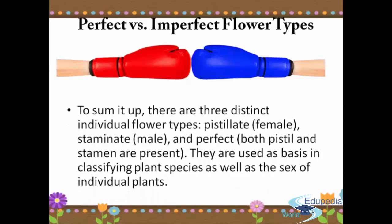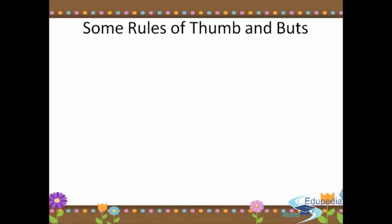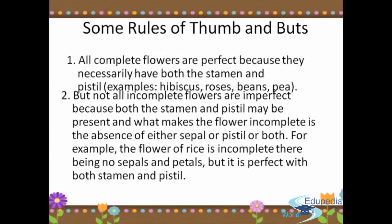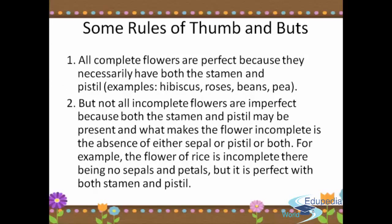To sum it up, there are three distinct individual flower types: pistillate for female, staminate for male, and perfect where both pistil and stamen are present. They are used in classifying plant species as well as the sex of individual plants. Some rules of thumb: all complete flowers are perfect because they necessarily have both the stamen and pistil — for example, hibiscus, roses, beans, and wheat. But not all incomplete flowers are imperfect, because both stamen and pistil may be present; what makes a flower incomplete is the absence of either sepal or petal or both.